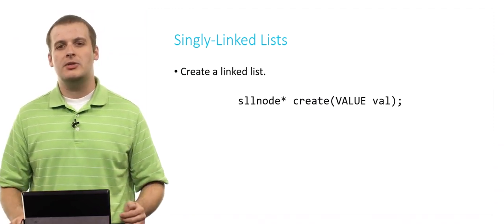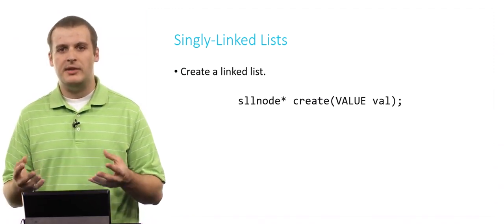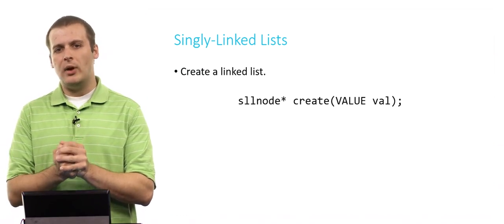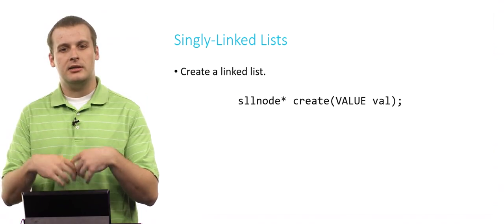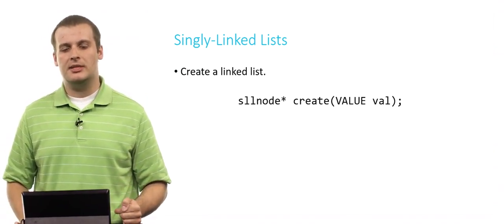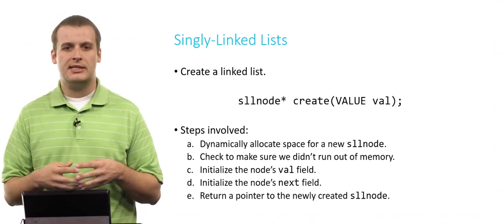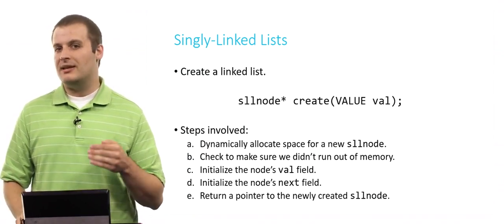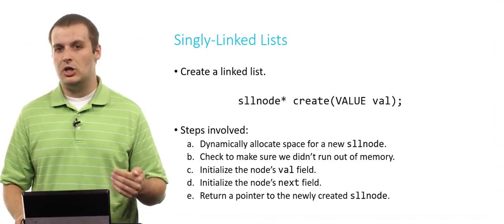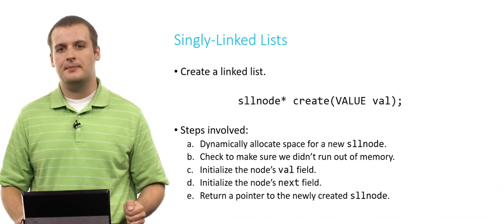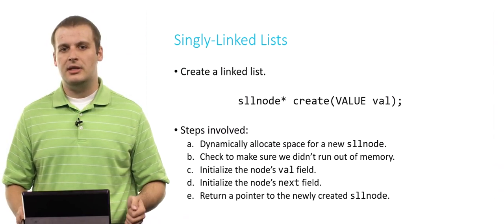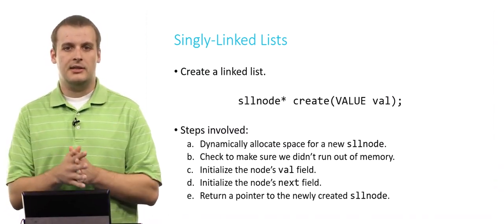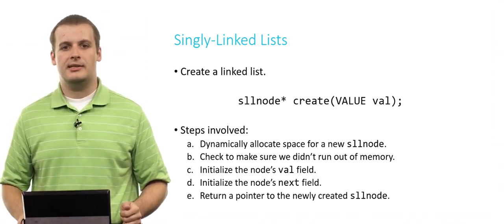To create a linked list, we might define a function with this prototype: sllnode star create, passing in one argument of some arbitrary data type, and returning a pointer to a singly linked list node. The steps are: first, dynamically allocate space for a new node using malloc. Immediately after malloc, always check that the pointer is not null - dereferencing a null pointer causes a seg fault. Then initialize the value field and the next field. Finally, return a pointer to the sllnode.